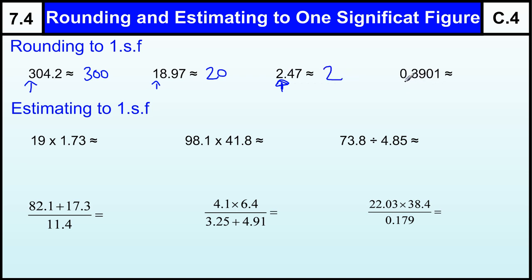And here we ignore the zero and we go to the first non-zero, which is this three. It's three tenths, so we round it to the nearest tenth, which is going to be 0.4.